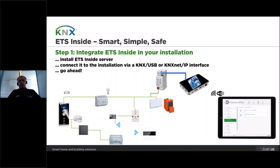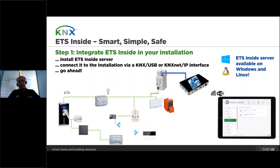The first step is to integrate the ETS-Insight server into the actual KNX installation. Download and install the ETS-Insight server on a computer — for example, a Raspberry Pi, a mini computer with Windows 10, a desktop computer, etc. — or purchase a device with the ETS-Insight server pre-installed. Importantly, the ETS-Insight server is available not only for Windows 10 but also for Linux, being the first commercial software by KNX Association that is Linux-based. Once installed, connect it to the KNX installation via KNX IP or a KNX USB interface and start.